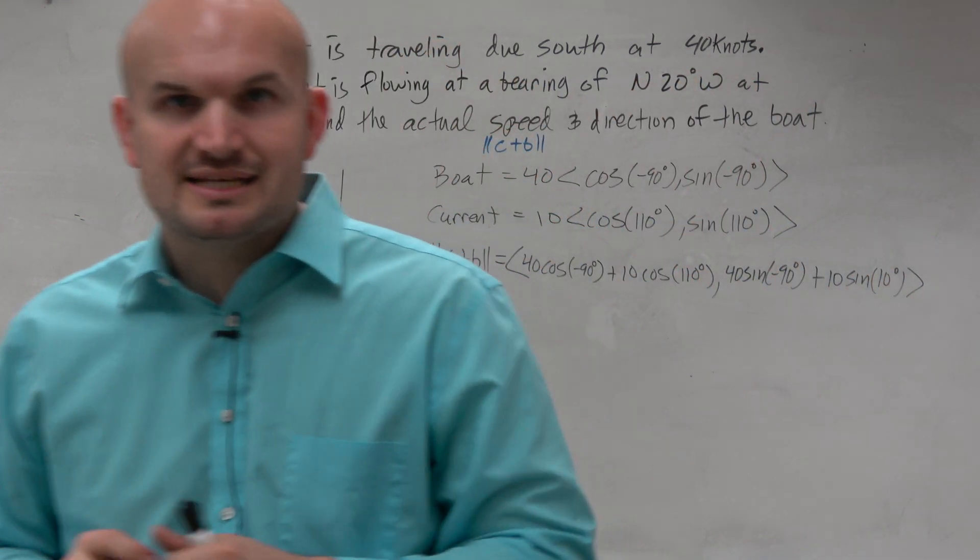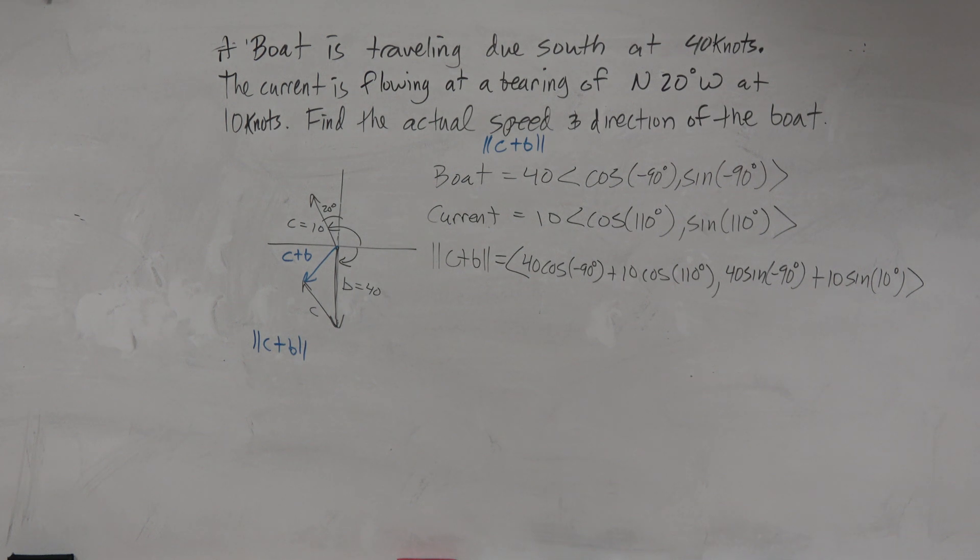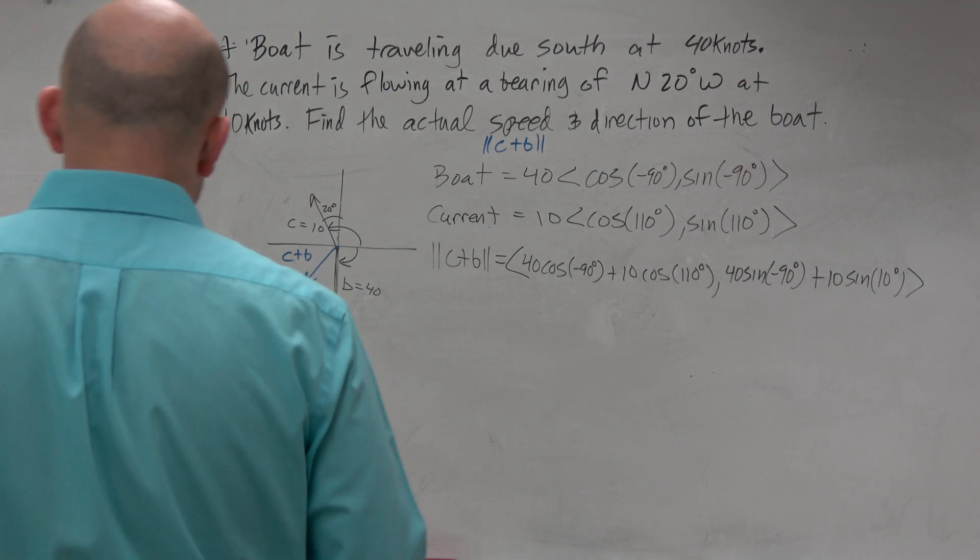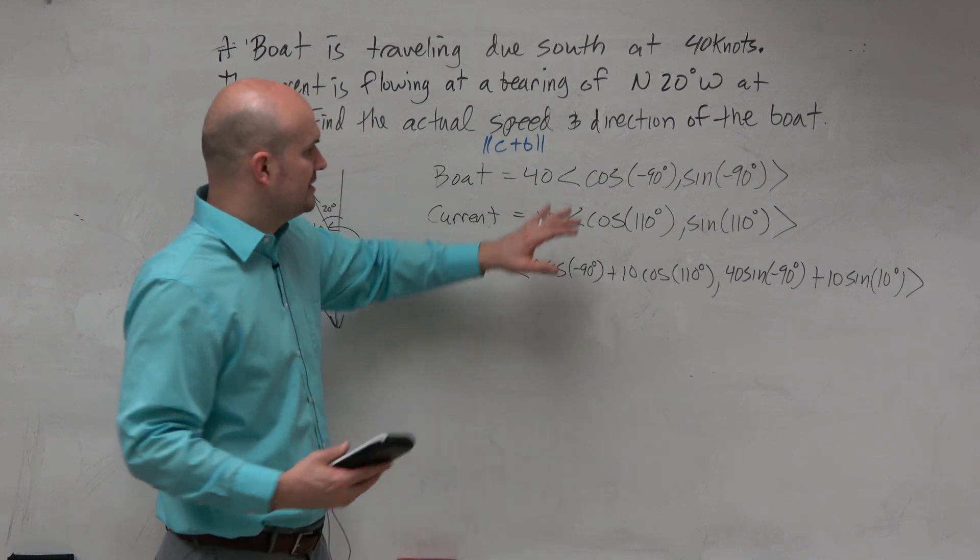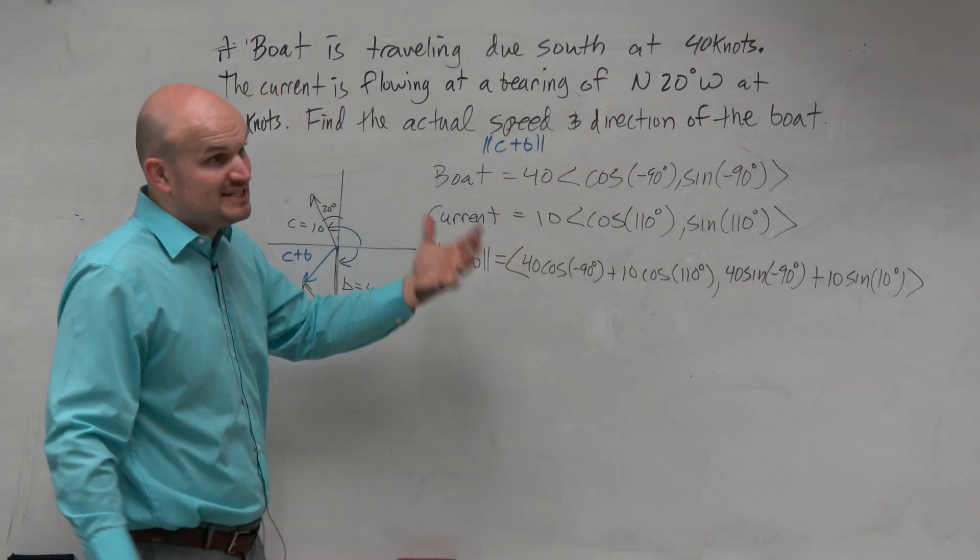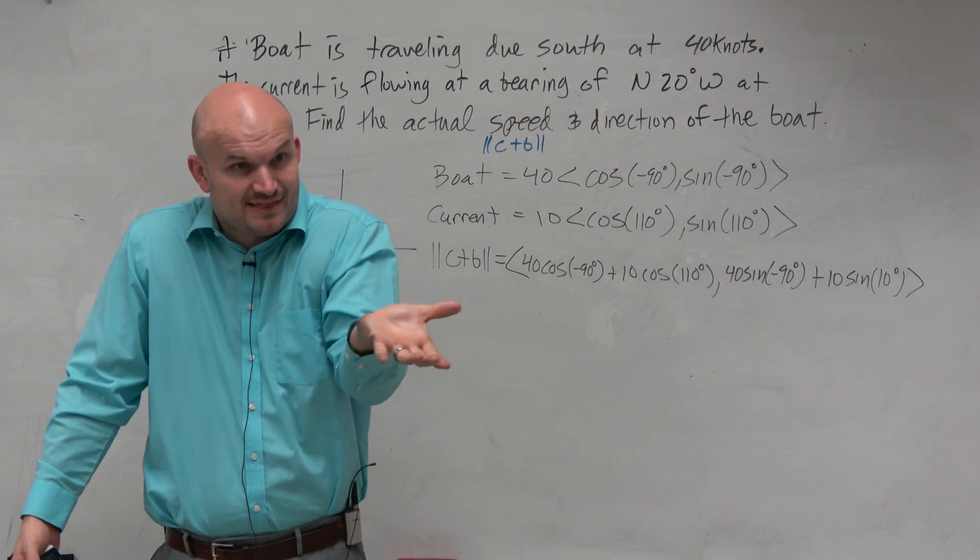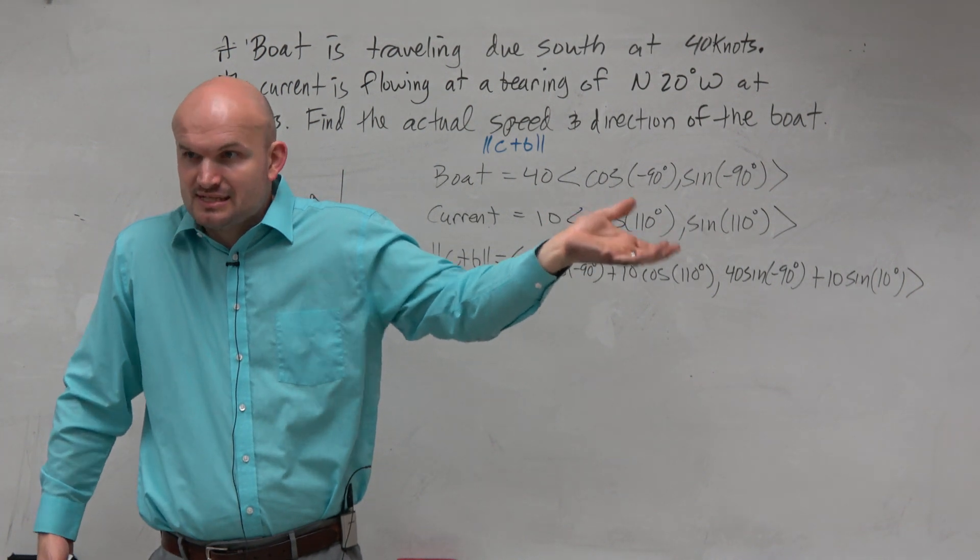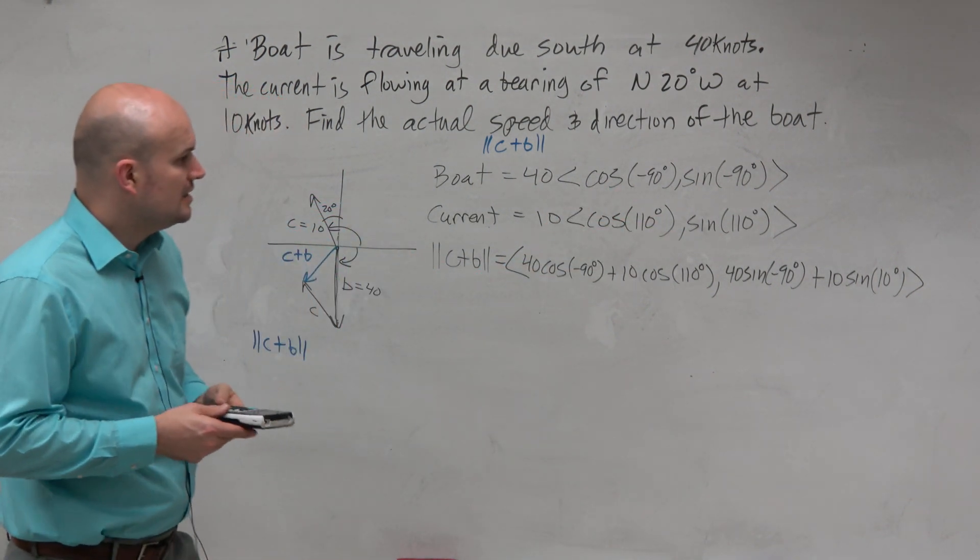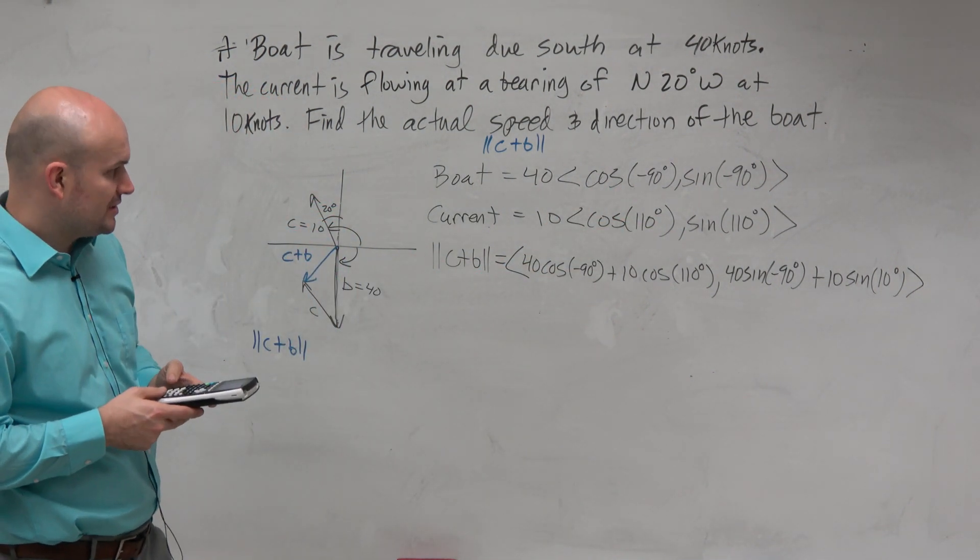Now, last class period, I did these individually and then saved them into my calculator. But if you guys understand, when you add, remember when we did vector addition, it was on your notes. You just add the first two components and add the last and the secondary components. So, let's go ahead and figure this out. It's a lot to type in our calculator, but we can do it.